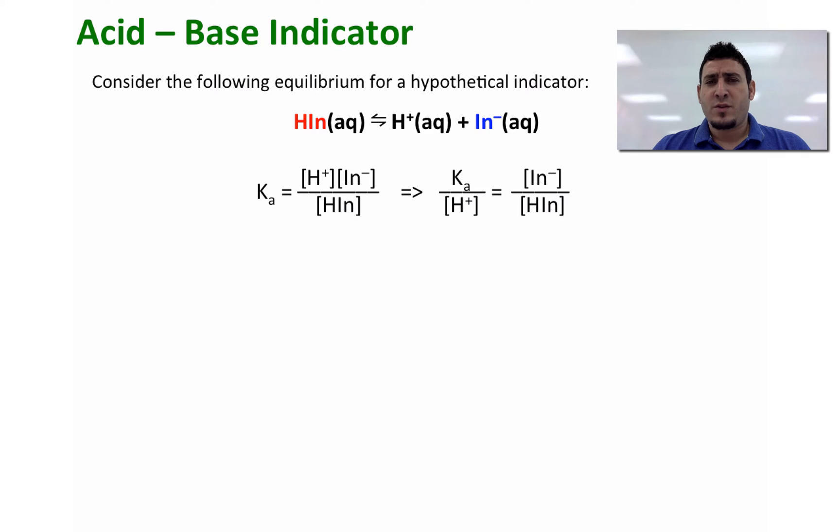We can write the expression of Ka for this equilibrium and we can rearrange it to get the ratio between Ka and the concentration of H⁺ is equal to the concentration of In⁻ divided by the concentration of HIn.